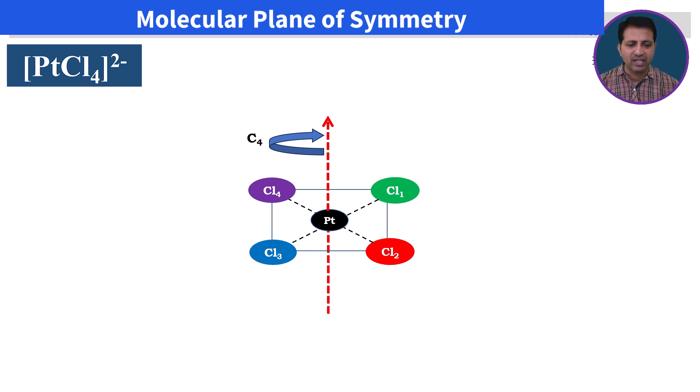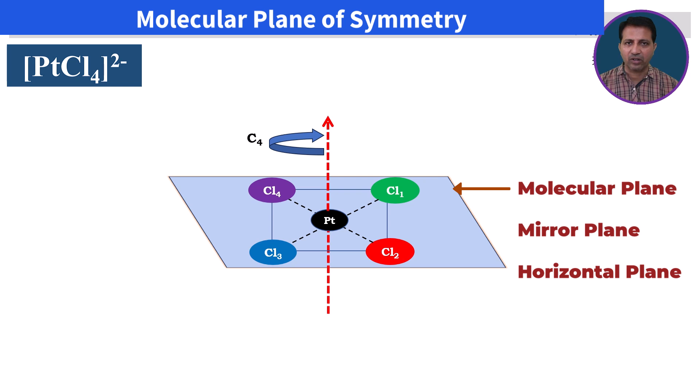Therefore, it is known as the C4 axis, and any plane that is perpendicular to this principal axis is called the molecular plane, mirror plane, or horizontal plane. It is represented with the symbol sigma h.